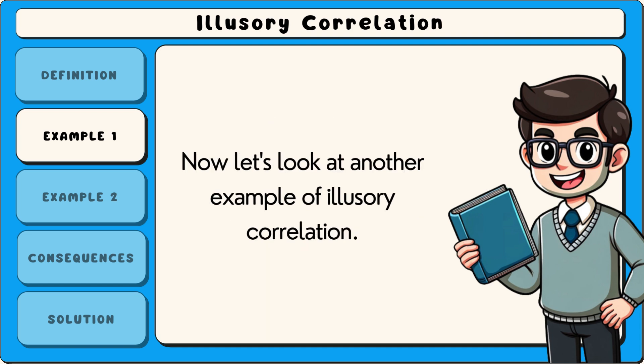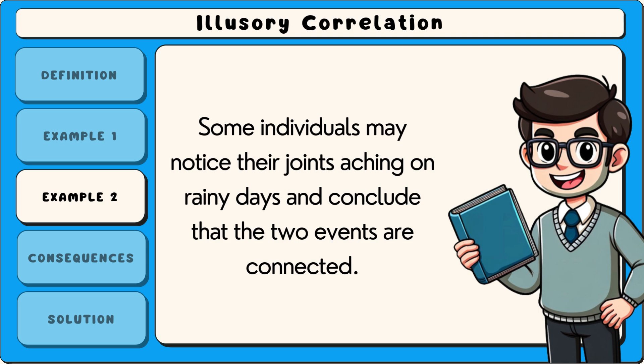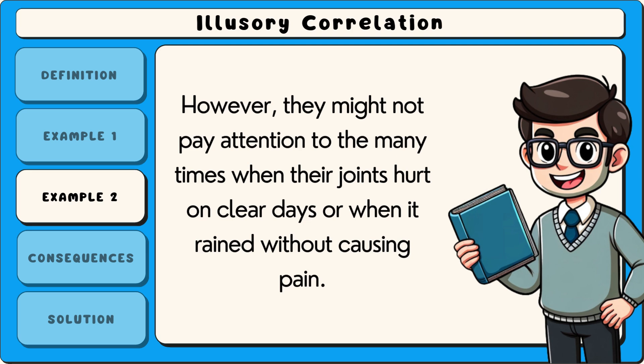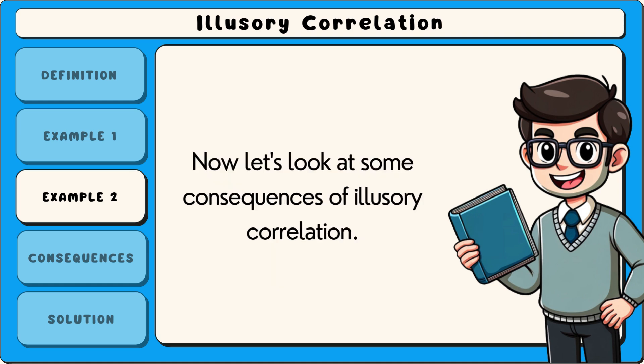Another example occurs when people assume that bad weather causes joint pain. Some individuals may notice their joints aching on rainy days and conclude that the two events are connected. However, they might not pay attention to the many times when their joints hurt on clear days or when it rained without causing pain. This selective attention strengthens the false belief that rainy weather is responsible for joint discomfort, even though scientific research has not found a consistent link between the two.